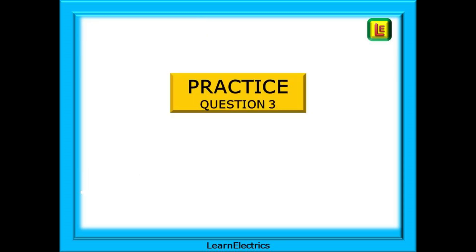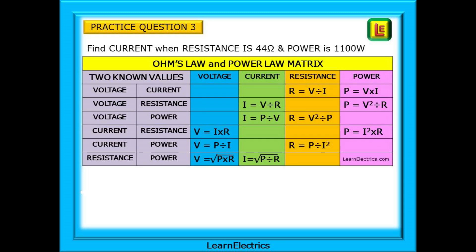Question number three now. We are asked to find the current when the resistance is 44 Ohms and the power is 1100 watts. Pause the video and make the calculation yourself. The answers are on the next slide. Here we have the answer, and hopefully you agree with our answer of 5 amps.